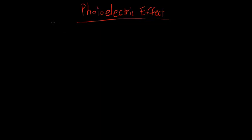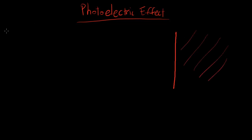Basically what the photoelectric effect is - take for example a metal. So let's say this is the surface of a metal. In the metal there are atoms, and in the atoms we have electrons. So here are some of the electrons that are on the surface of the metal, near the surface of the metal.